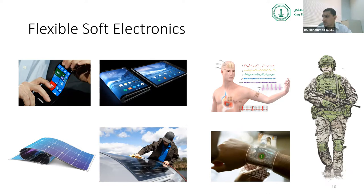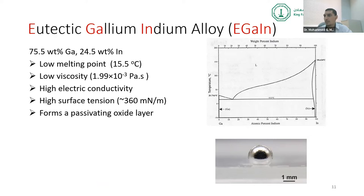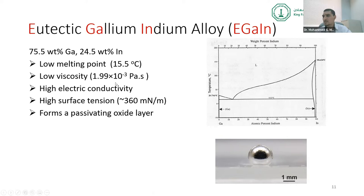The gallium-indium alloy shown in the earlier video is a eutectic alloy with 75.5 weight percent gallium and the rest indium. From the phase diagram, its melting point is 15.3 degrees Celsius, so it's liquid at room temperature — and it's actually supercooled, so it can stay liquid at even lower temperatures. It has low viscosity — about double that of water — and high electrical conductivity, roughly one-tenth that of copper, which is still sufficient for these applications.